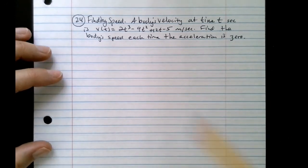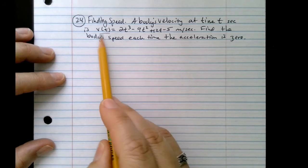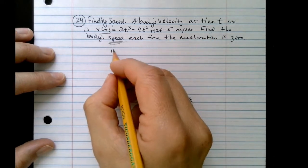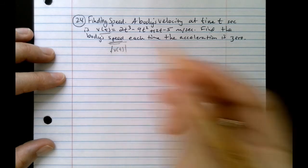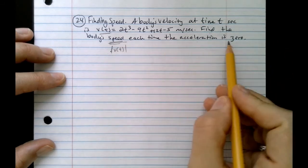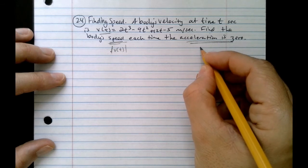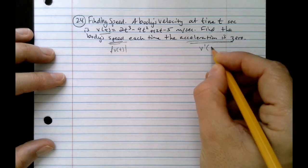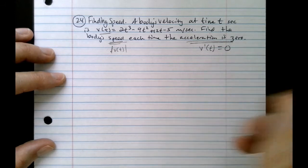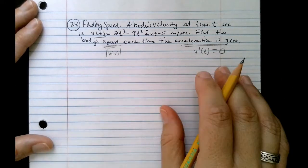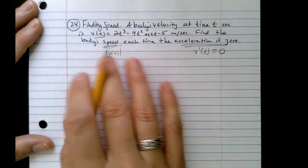We're given velocity, but we want to find the body's speed, which we know is the absolute value of velocity, when acceleration is zero. But when acceleration is zero, we know acceleration is the first derivative of velocity. We just broke this down. So the place where we have to start is we have to figure out the when before we can find the what.